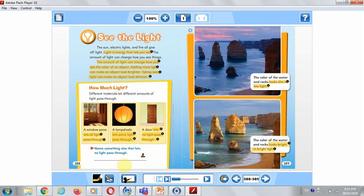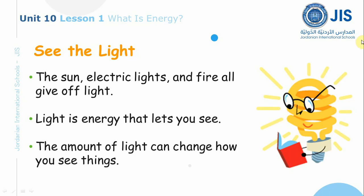Please, after you're done, solve the question, take a picture of your answers, and send it back to me. So today we've learned that the sun, electric lights, and fire all give off light. Light is energy that lets you see, and the amount of light can change how you see things. Adding more light can make an object look brighter, and taking away light can make an object look dimmer.